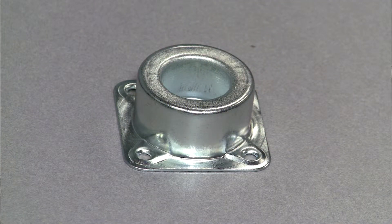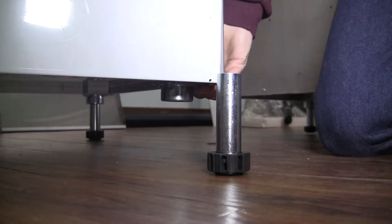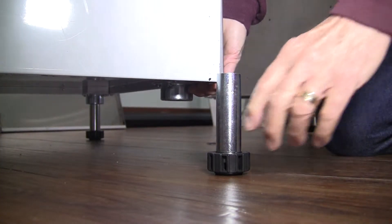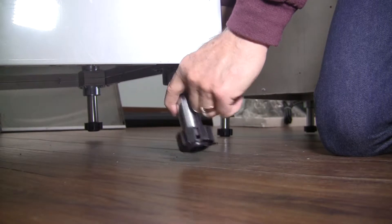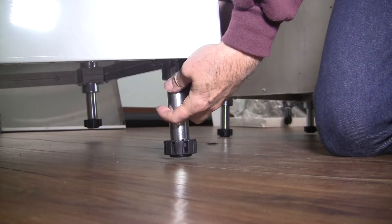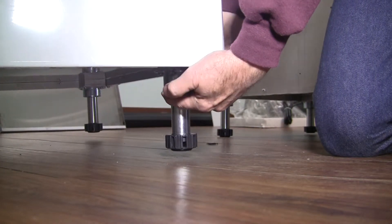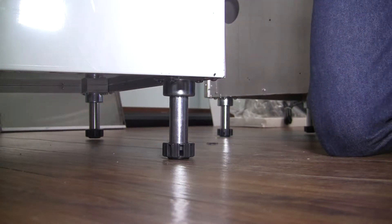Cups to receive the adjustable legs have already been screwed on at the factory, and all you have to do is lift the cabinet and stick the adjustable leg into the cup.